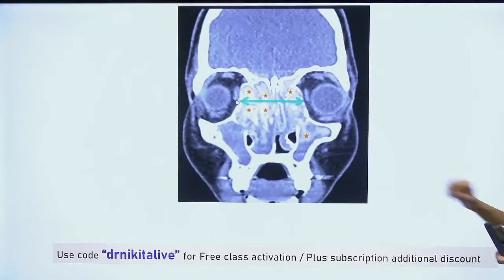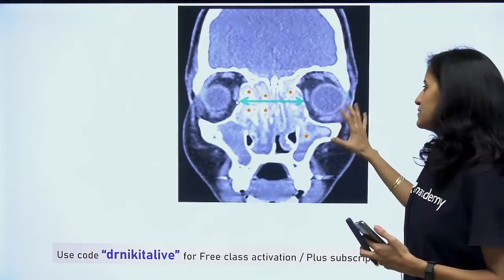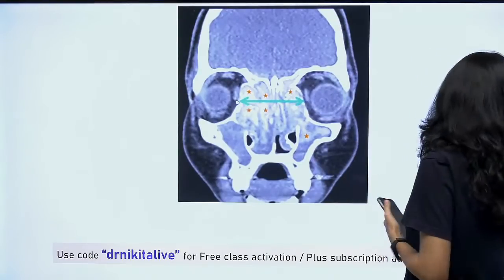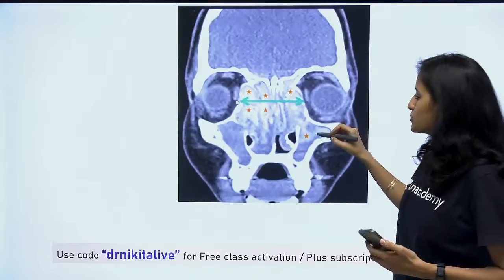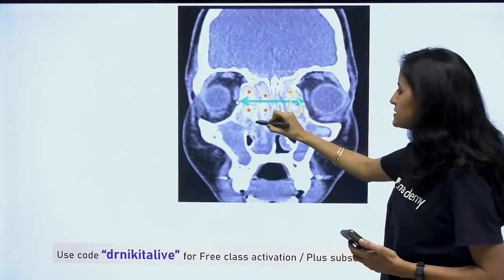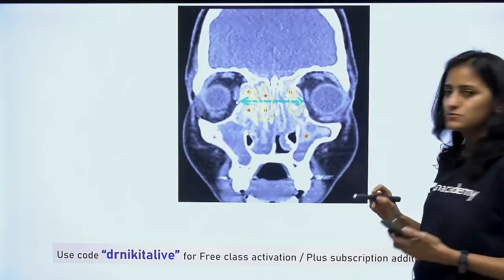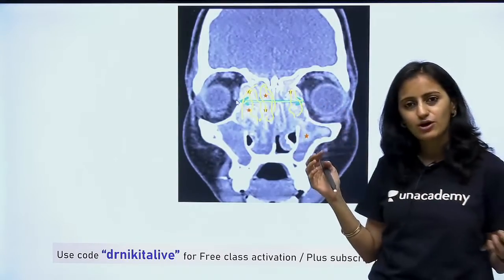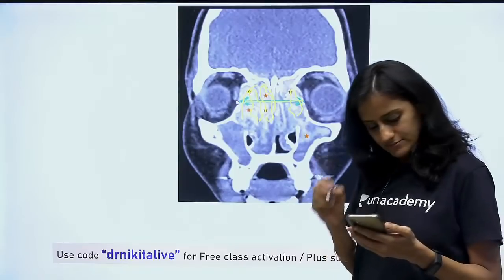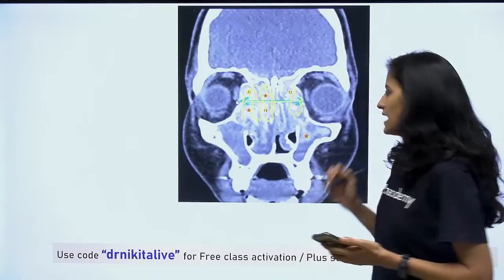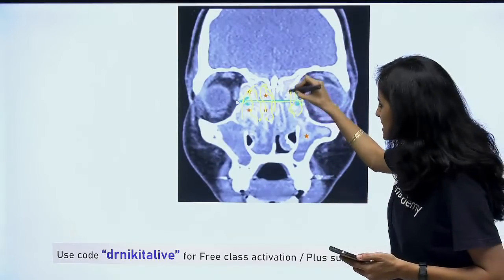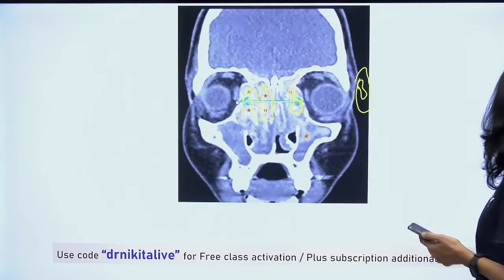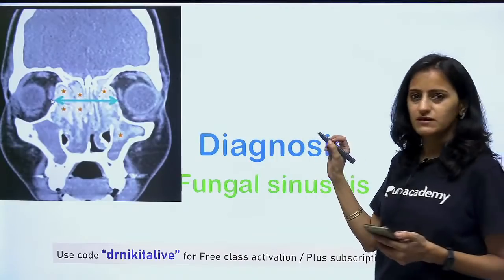Now coming to the next image — what do you think is the diagnosis here? We see hyperdensities within the sinuses. These hyperdensities within the sinuses, the sinuses are expanded, which is leading to hypertelorism — a recent NEET-PG question. This is your fungal sinusitis, specifically your allergic fungal sinusitis, where you see this double density. Under you will see more dense and behind you have the soft tissue density. That is your fungal sinusitis — very, very important.